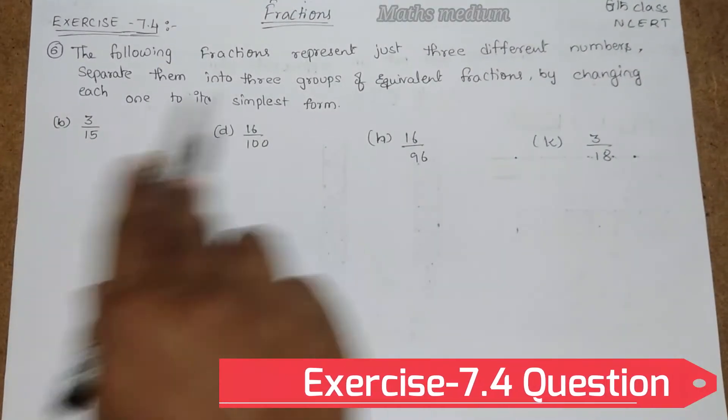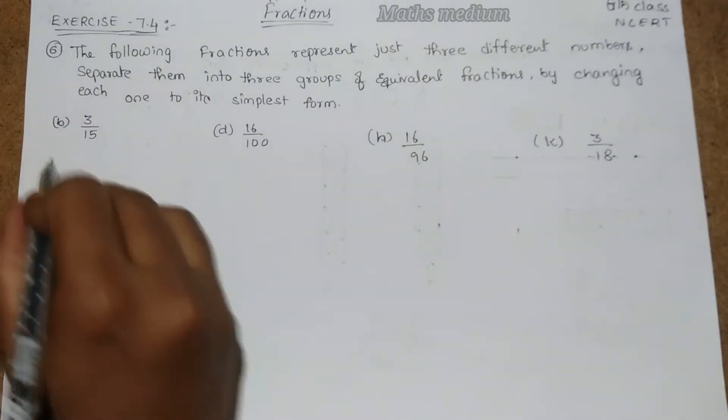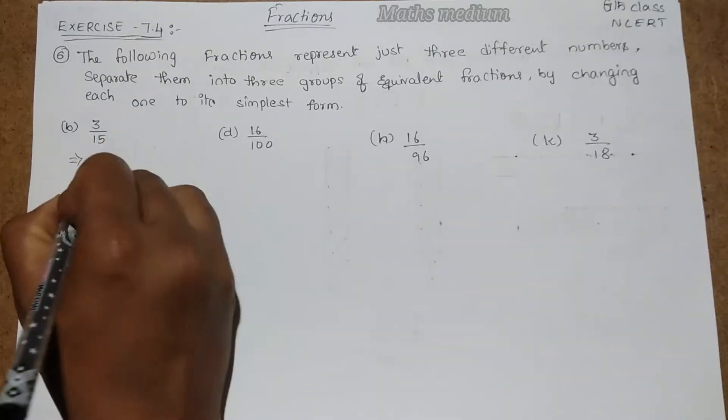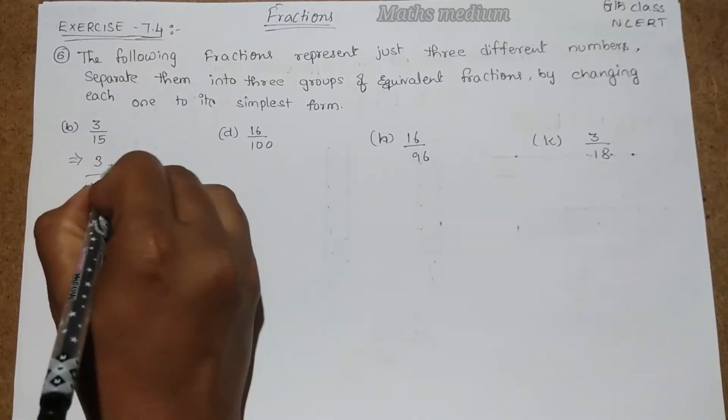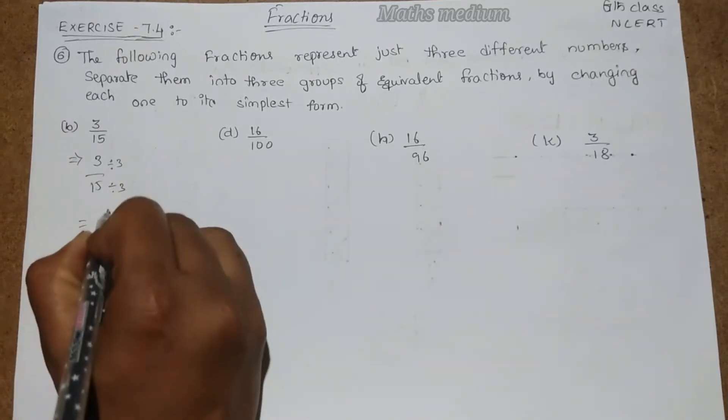So here I took randomly some questions. Let's take b. If you make this into simplest form, 3 by 15, if you divide both numerator and denominator by 3, then we will get 1 by 5.